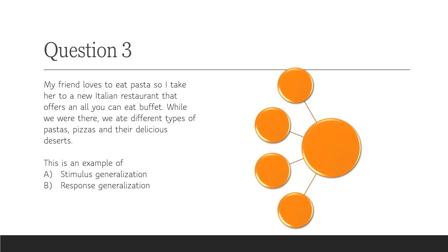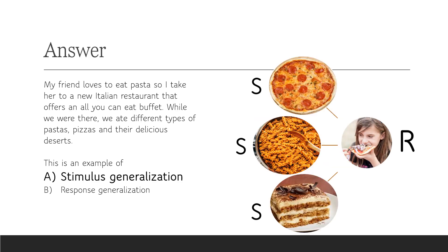Question 3: My friend loves to eat pasta, so I take her to a new Italian restaurant that offers an all-you-can-eat buffet. While we were there, we ate different types of pastas, pizzas, and their delicious desserts. Is this an example of stimulus generalization or response generalization? The answer is stimulus generalization. We have only one response — eating — and different stimuli: the delicious pasta, pizza, and dessert.